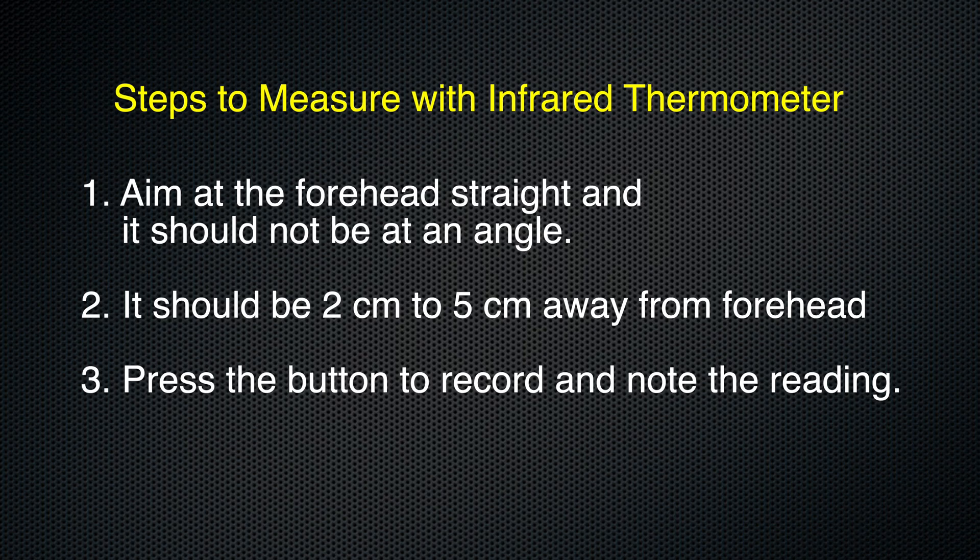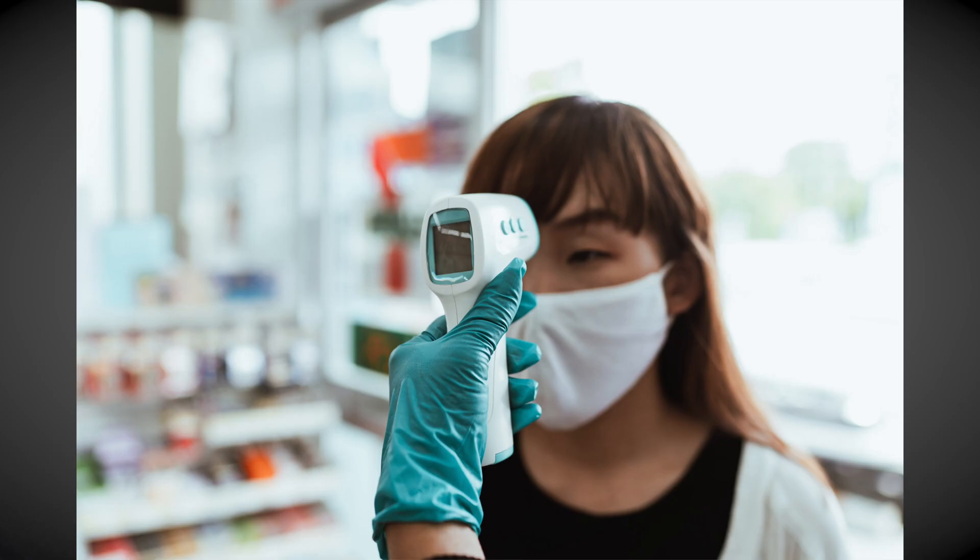When you measure the temperature with an infrared thermometer, make sure it is two to five centimeters away from the forehead and aim it straight — it should not be at an angle. Press it and it shows the temperature recording. Note it with the date and time.